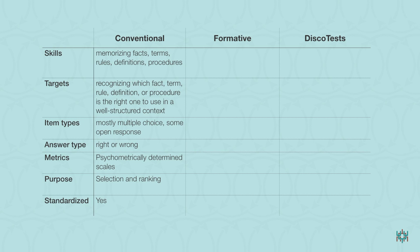What does VCOL plus seven have to do with assessment? From our perspective, everything. We think the primary justification for any educational assessment is the role it plays in supporting high-quality learning. Let's look at how three different kinds of assessments — conventional, formative, and DISCO tests — measure up along several dimensions, including the kinds of skills they target, the targeted constructs, item types, answer types required, the kind of metrics being used, the purpose of the assessments, and whether or not the assessments are standardized. In the case of conventional assessments, the skills are primarily memorizing facts, terms, rules, definitions, and procedures. The targets are recognizing which fact, term, rule, definition, or procedure is the right one to use in a specific, well-structured context. Item types are mostly multiple choice, but the answer type is still pretty much right or wrong. The metrics are psychometrically determined — arbitrarily determined scales based upon student performance — and the purpose has been primarily selection and ranking.